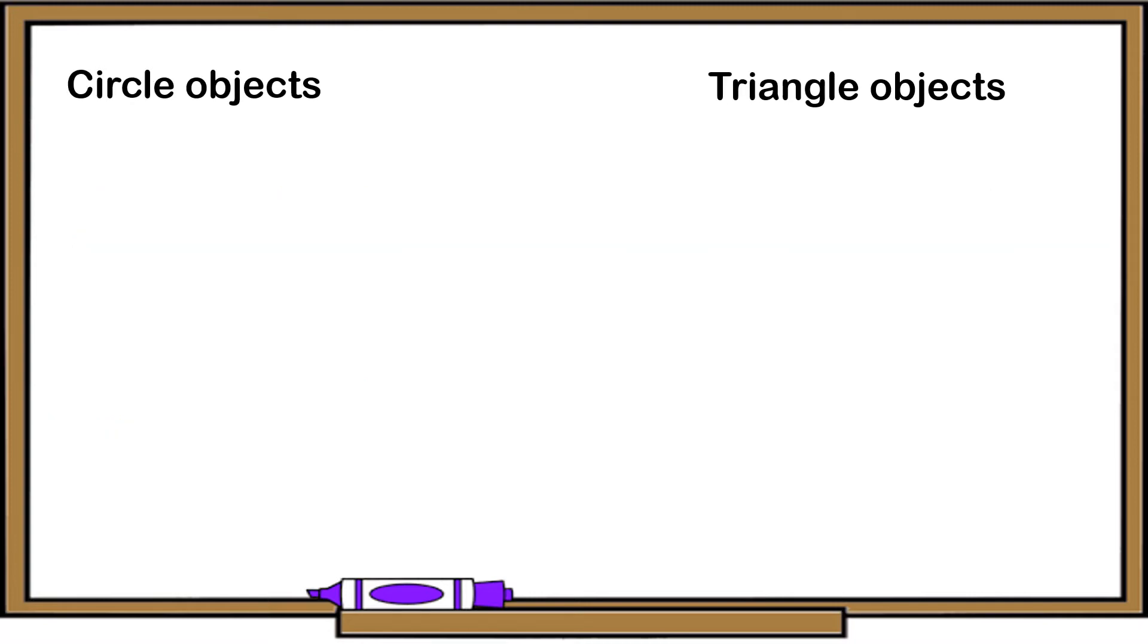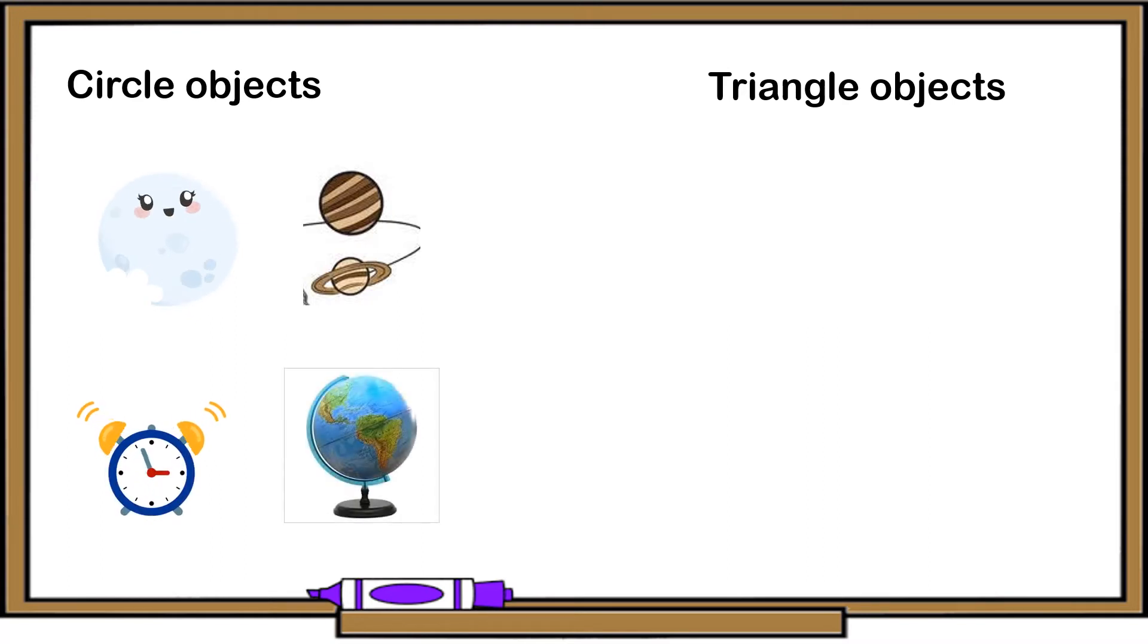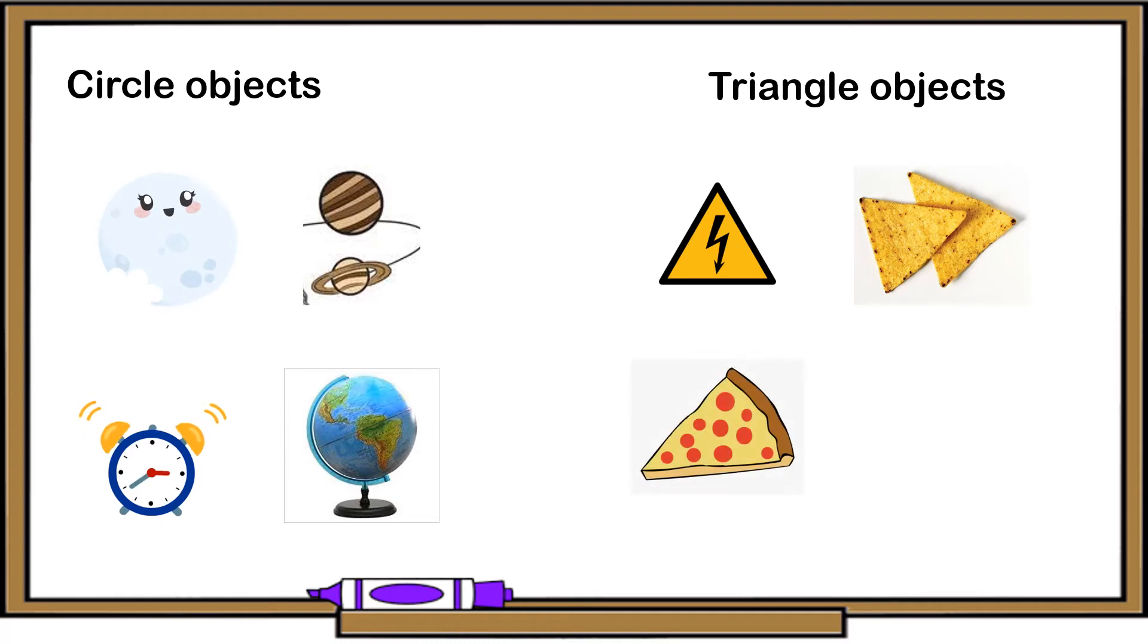Here are some examples of circle objects. We have the moon, the planets, the clock, the face of the clock, and the globe. How about triangle objects? We have the sign, the chips, the pizza pie, and the slice of watermelon. Can you name any objects that is circle and triangle?